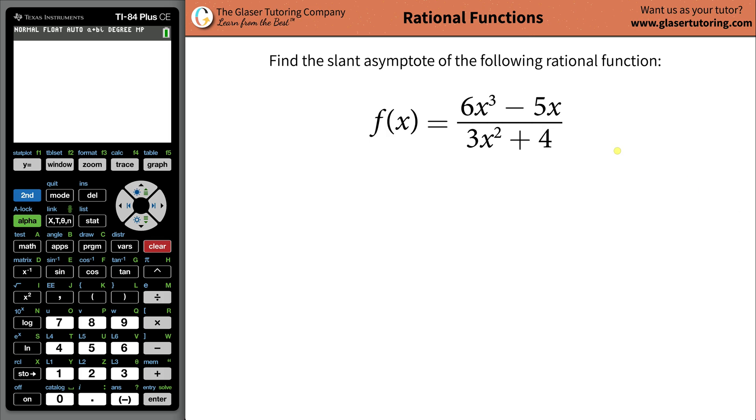Hi everyone, Andrew here. Today I would like to teach you how to find the slant asymptote of this rational function of 6x cubed minus 5x divided by 3x squared plus 4.